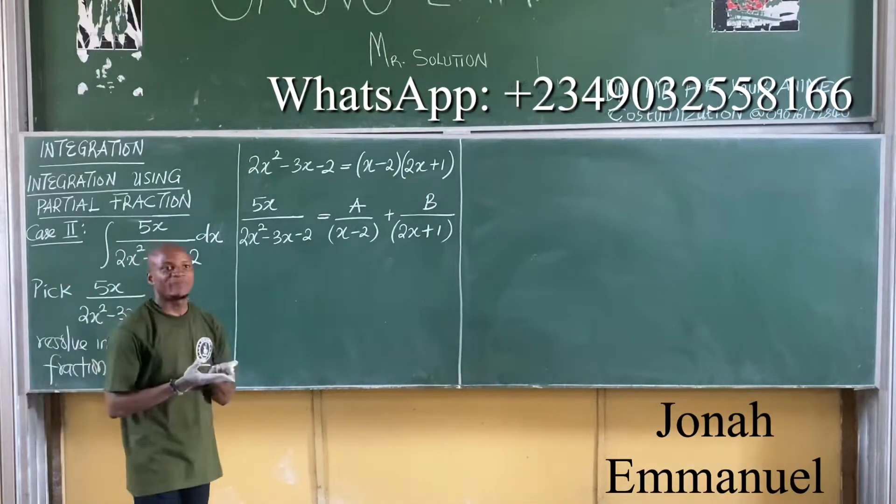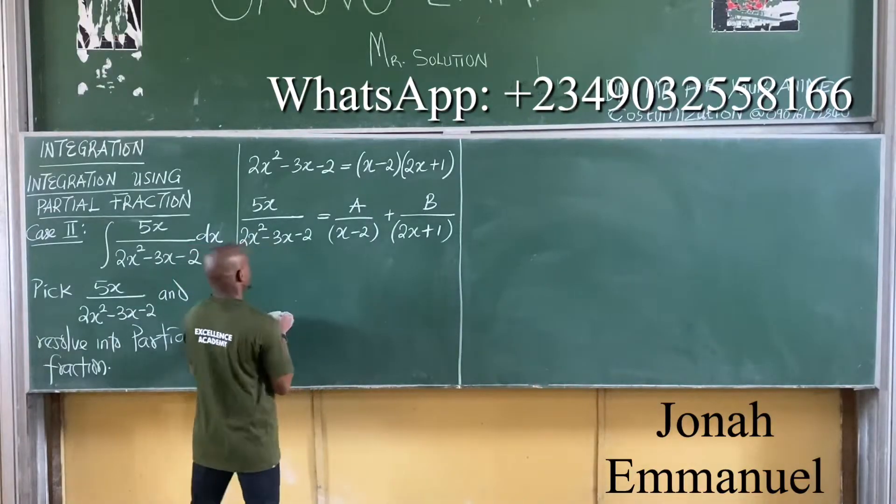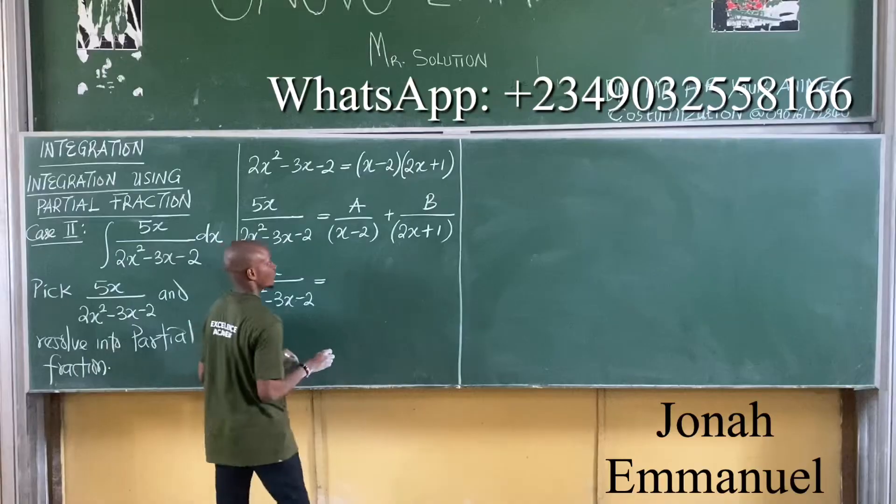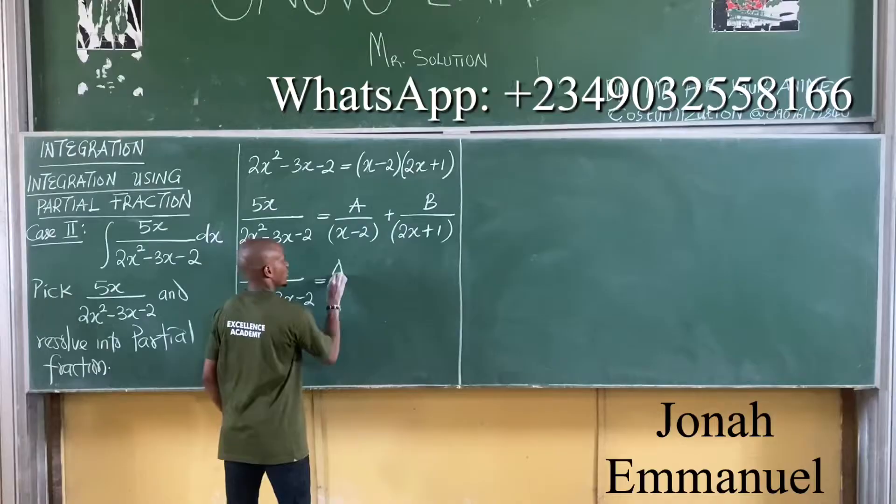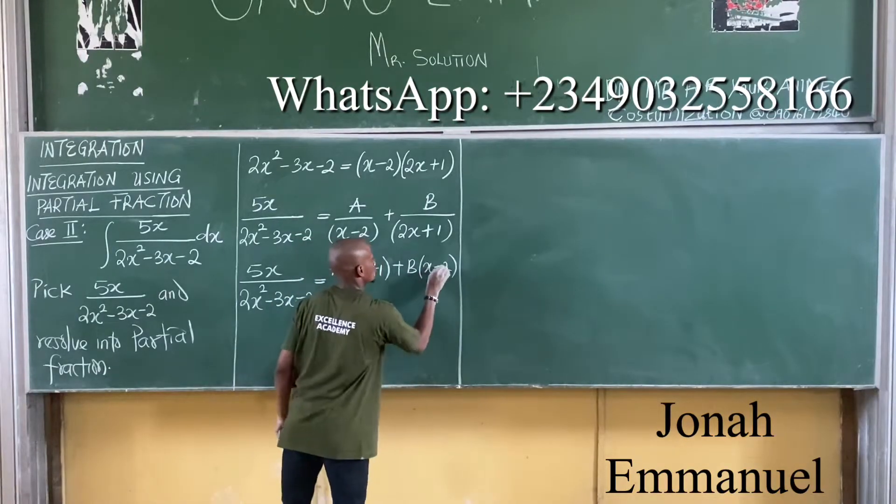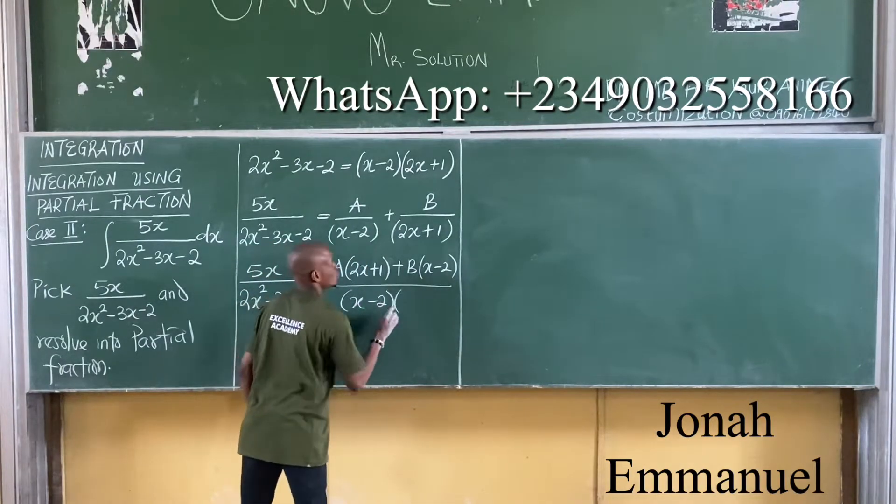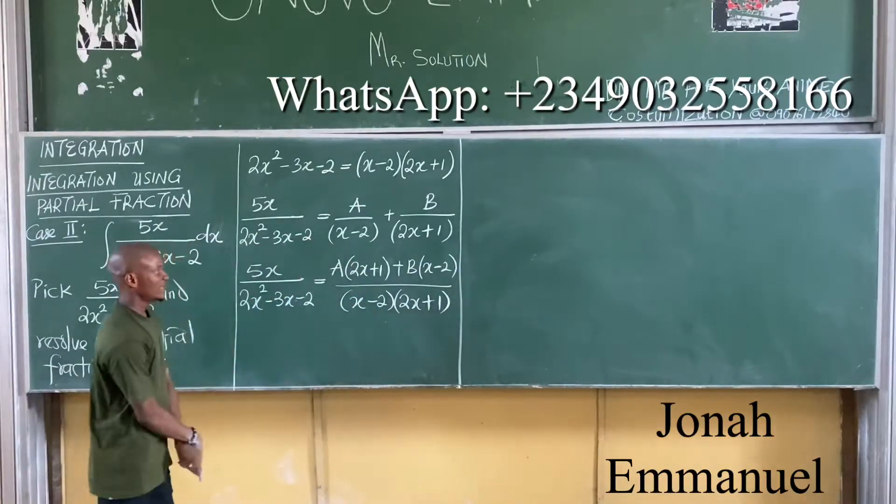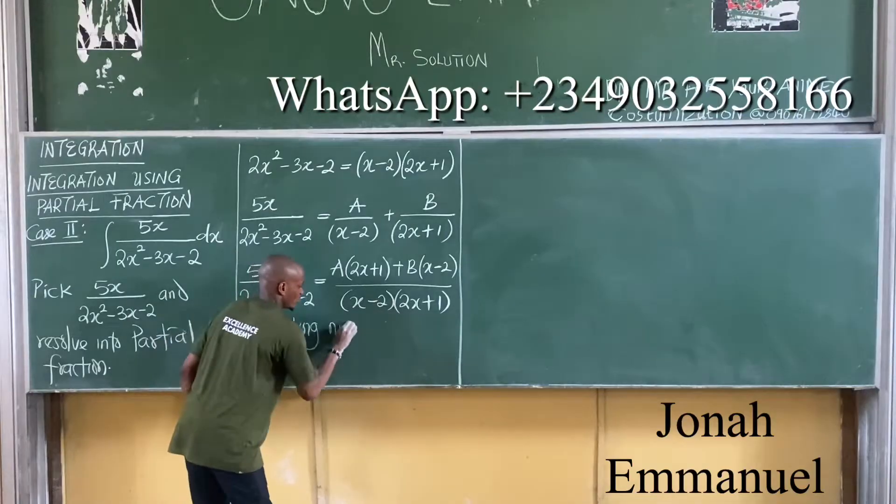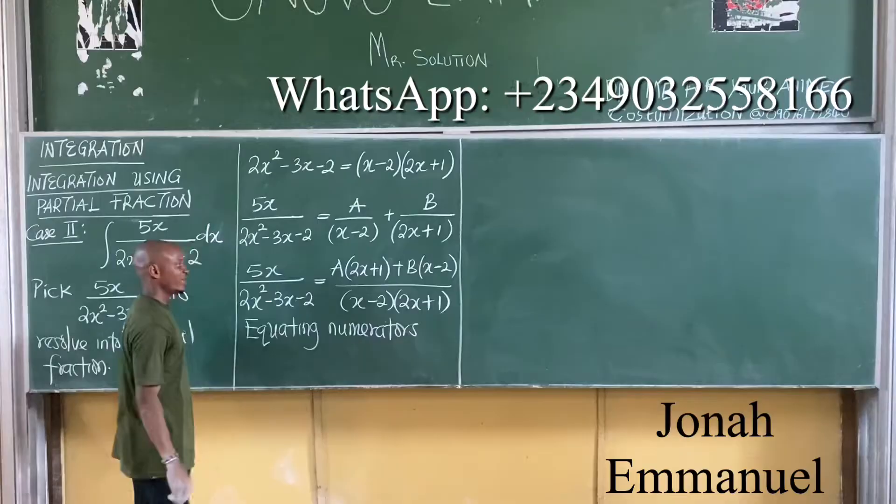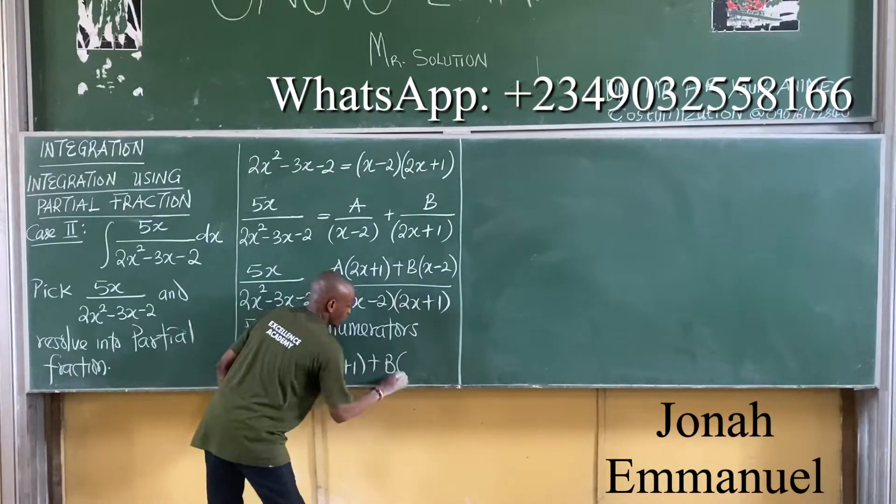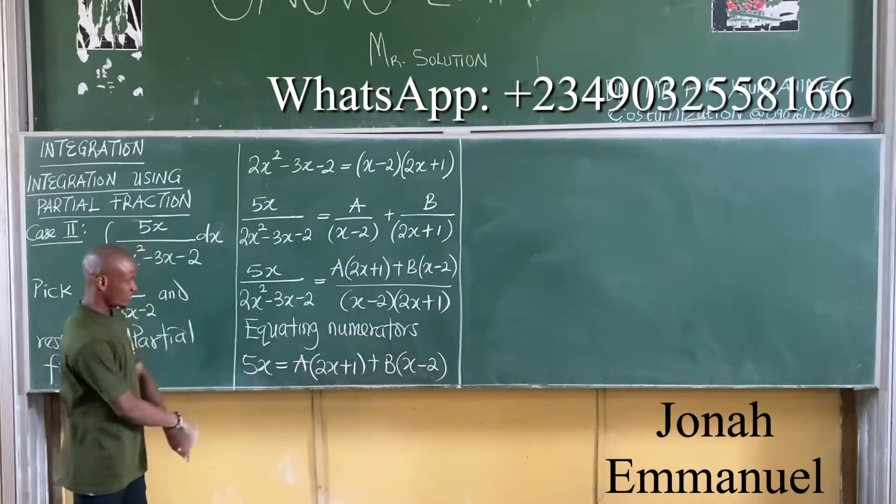It depends on the method of partial fraction you want to use. For this one here I will have to combine these two. So I will have that 5x all over 2x squared minus 3x minus 2 is equal to, if I'm combining this, A into 2x plus 1 plus B into x minus 2, then combine these two. That gives you x minus 2 into 2x plus 1. My next task now will be equating numerators. I have that 5x is equal to A into 2x plus 1 plus B into x minus 2.